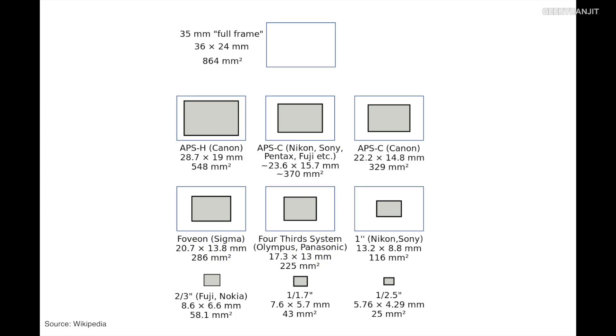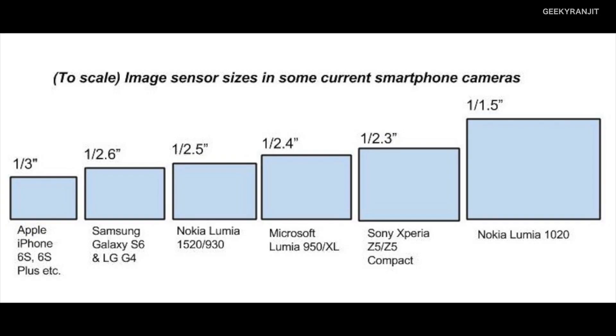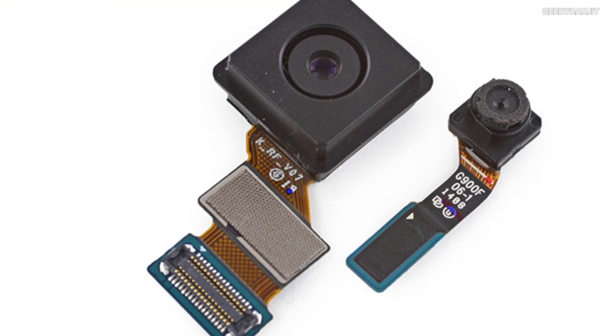Looking at the chart, you'll be surprised to find that the sensors used in your smartphones are even smaller than the last one shown, which already has a surface area of just 25mm². Here is a chart showing the actual sensors generally used on most modern smartphones — forget about the Nokia Lumia 1020 which had a massive sensor for a smartphone. The physical area available on a smartphone is simply very limited, so the camera sensors are very small.